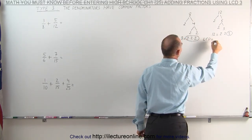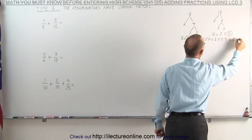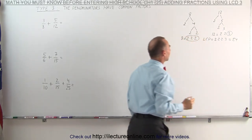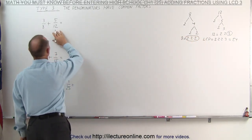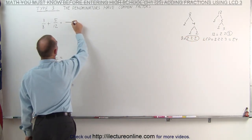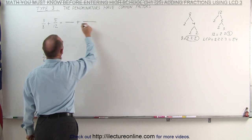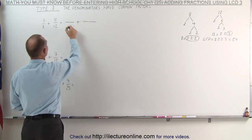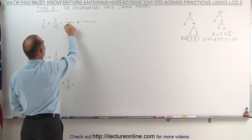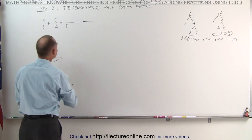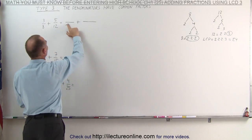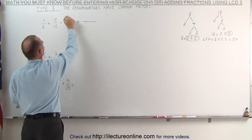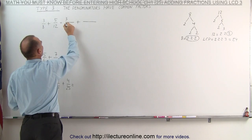Now we have to circle the prime factors which occur the most. Here the number 2 occurs 3 times, and over here it only occurs 2 times. Here we have the number 3 that occurs once; it doesn't occur at all on the other side. So the lowest common denominator in the first example is equal to 2 times 2 times 2 times 3, which is equal to 24.